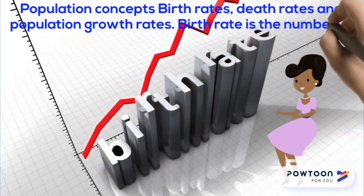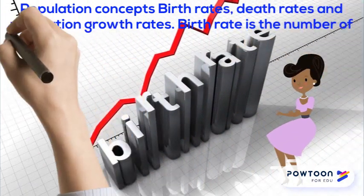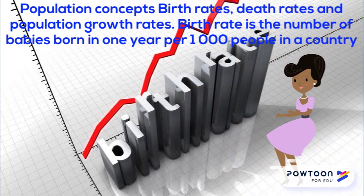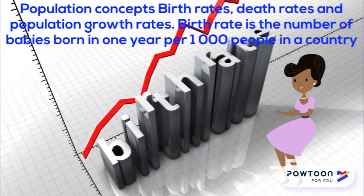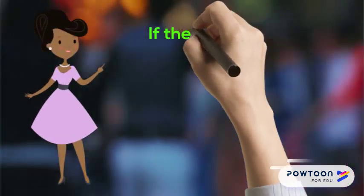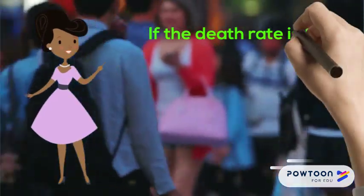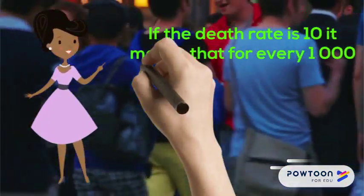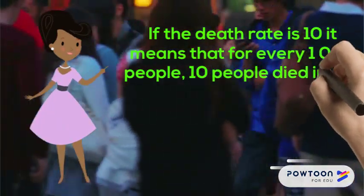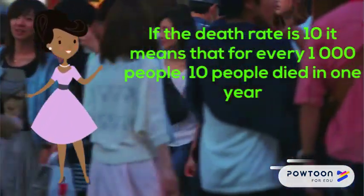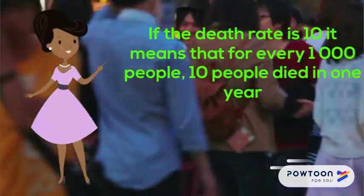Birth rate is the number of babies born in one year per 1,000 people in a country. If the birth rate is 15, it means that for every 1,000 people, 15 babies were born in one year. Death rate is the number of deaths in one year per 1,000 people in a country. If the death rate is 10, it means that for every 1,000 people, 10 people died in one year.